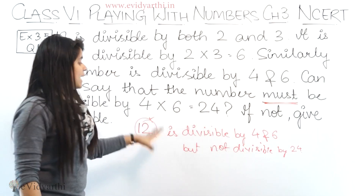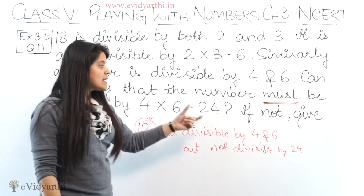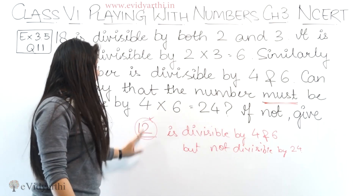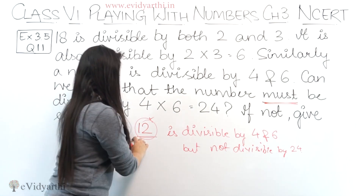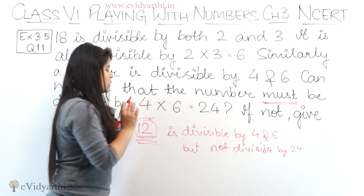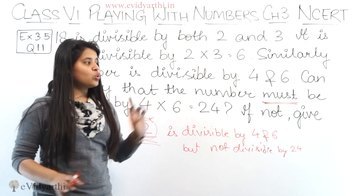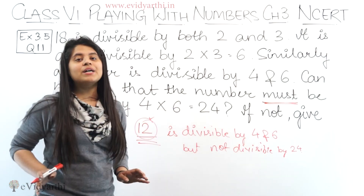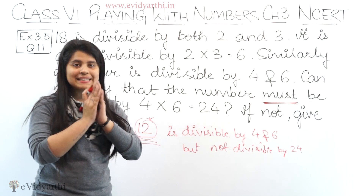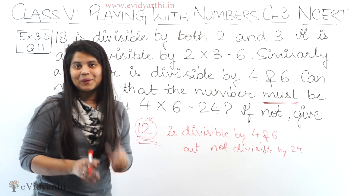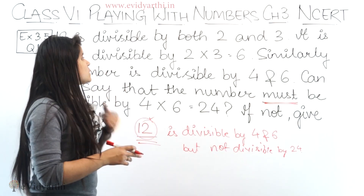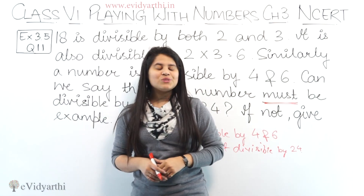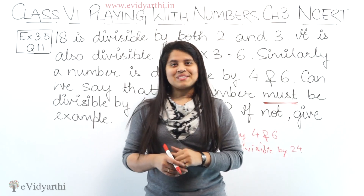So this is the explanation. Why do we say no? Because there is an exception here. The number 12 is divisible by both 4 and 6, but it is not divisible by 24. So this was question number 11. Now let's come to the next question.